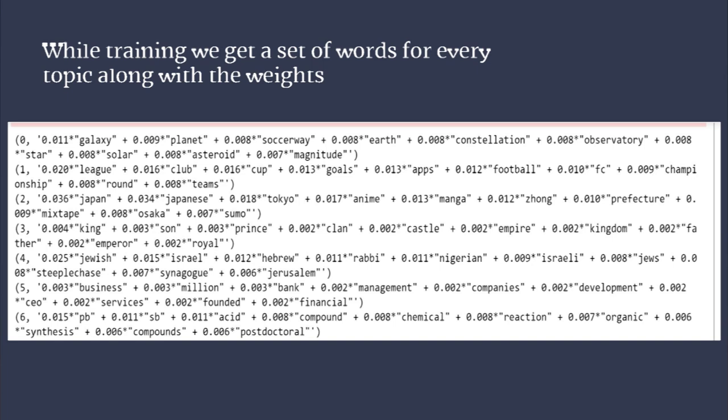In the first line we can see words like galaxy, planet, earth — so this topic might be related to astronomy, although we haven't labelled it. In the second line we can see apps, football, championship, teams — so this topic is related to football or sports. Just like that we can see the results for other topics as well.